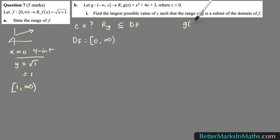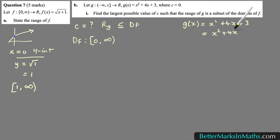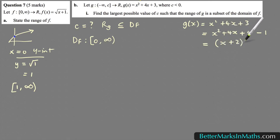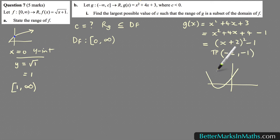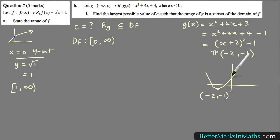So g(x) equals x squared plus 4x plus 3. Completing the square: half of 4 is 2, 2 squared is 4, so you add 4 and minus 1, giving (x plus 2) squared minus 1. The turning point is therefore (−2, −1). Remember, the x value is what makes the bracket zero, and then whatever the constant is. Drawing a sketch: the turning point is at (−2, −1) and the y-intercept is 3.